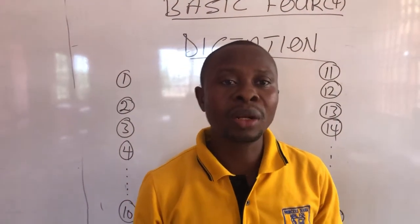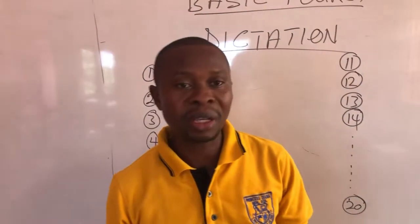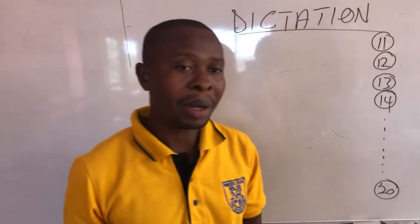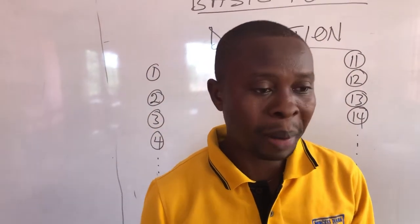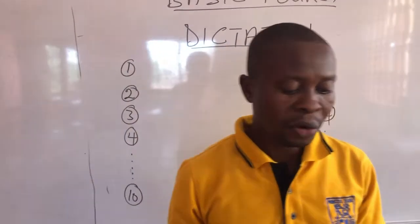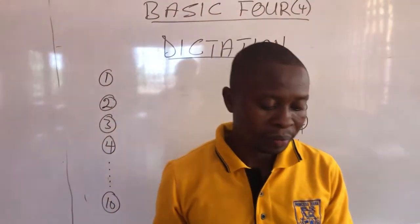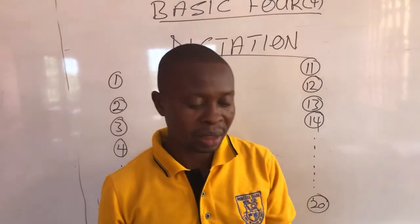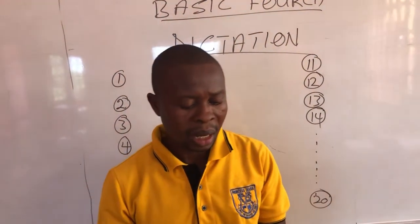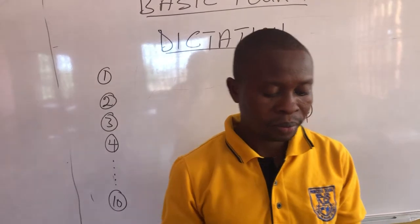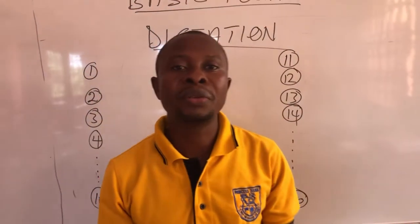Now let's quickly go over again. Number 1, victory. Number 2, present. Number 3, depart. Number 4, breathe in. Number 5, furniture. Number 6, empty. Number 7, enemy. Number 8, narrow. Number 9, define. Number 10, beautiful.